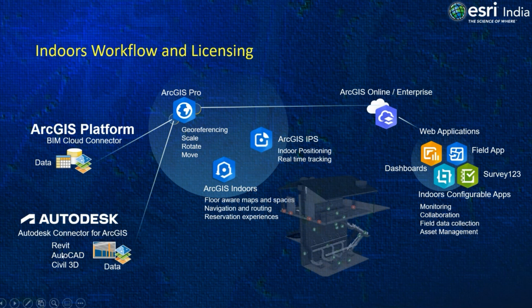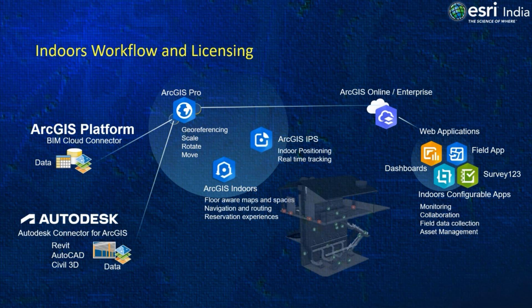Alternatively, I can also pull in any GIS layers published onto my enterprise or online account using the Autodesk Connector for ArcGIS plugin, which is natively available with all Autodesk applications — available within Revit, Civil 3D, InfraWorks, as well as AutoCAD. I can use that as a base reference for geo-referencing, giving it the correct location and coordination, and then pull that dataset into ArcGIS Pro.